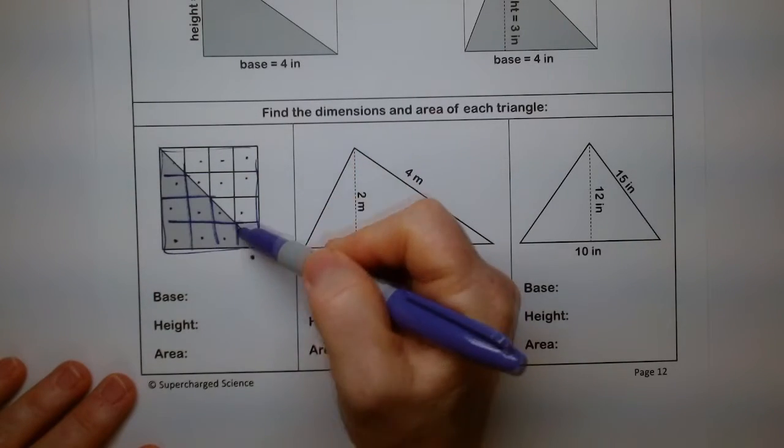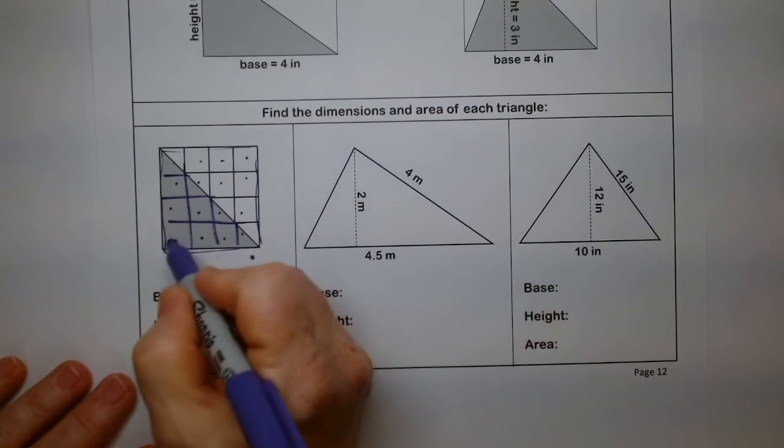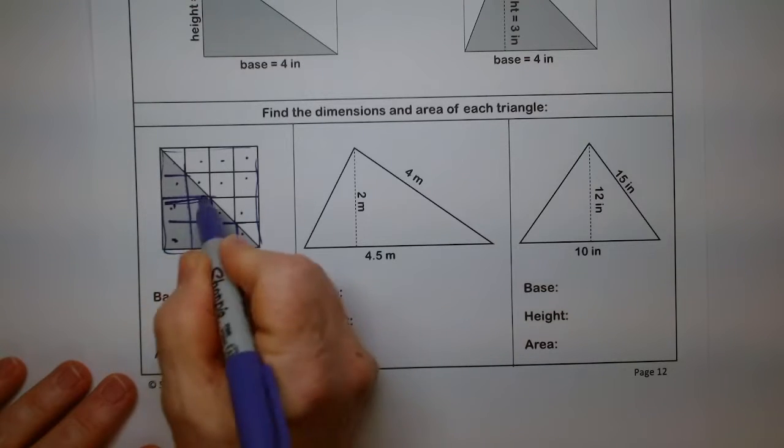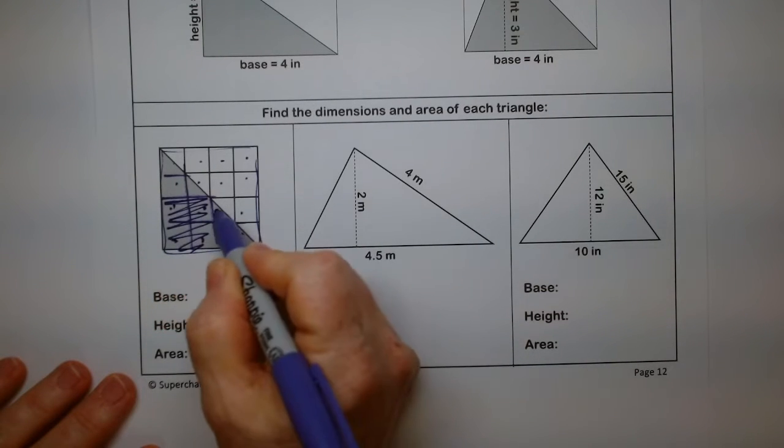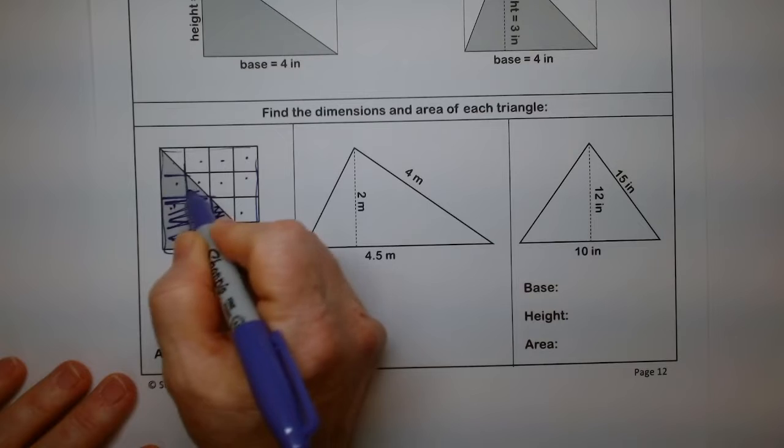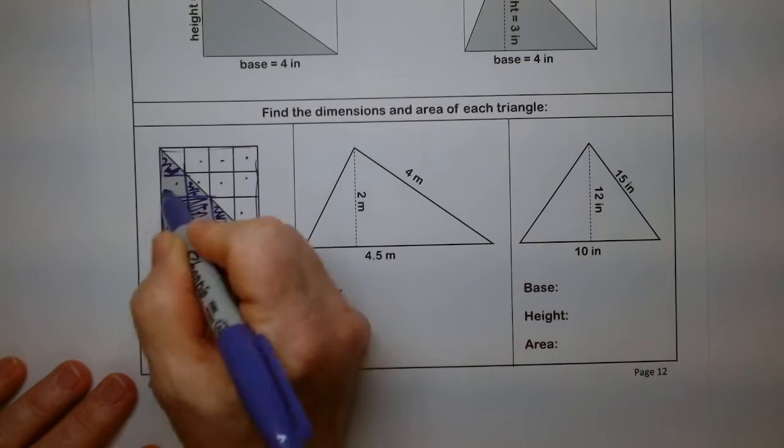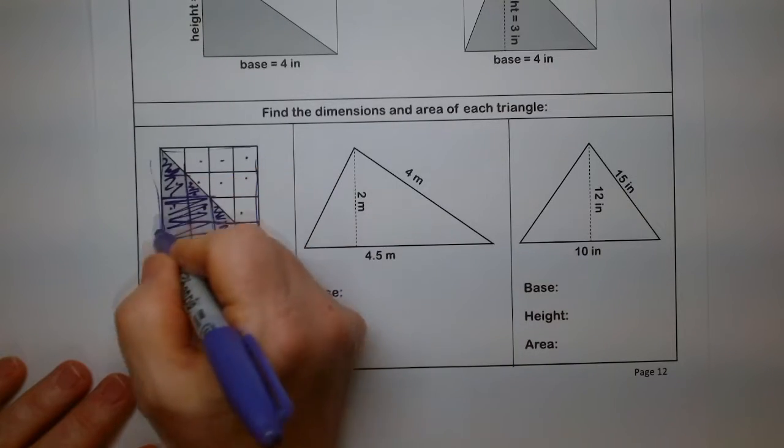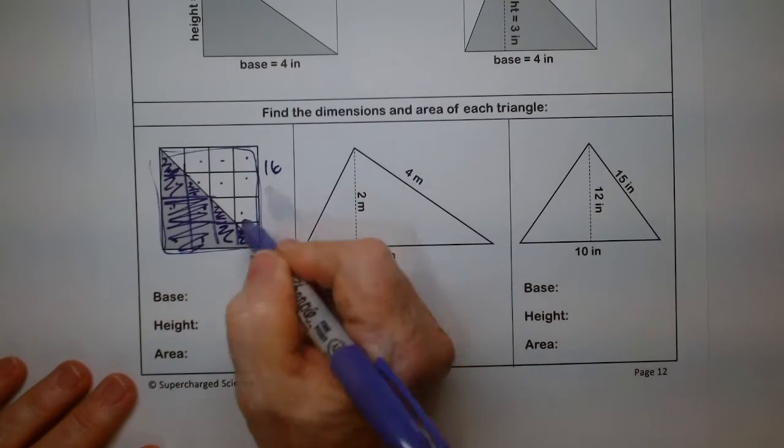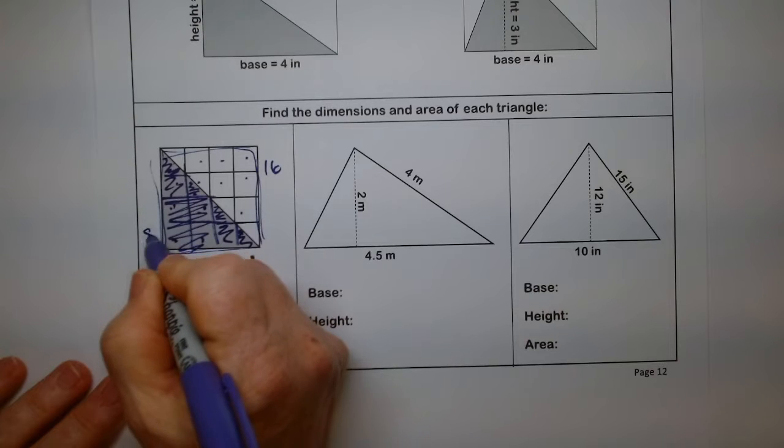But if I were to count up the shaded area here, I would have a whole 1, 2, 3, 4, right? And then this is half of one that matches that one. So that's 5. Here's another half. There's 6, 7, and 8.